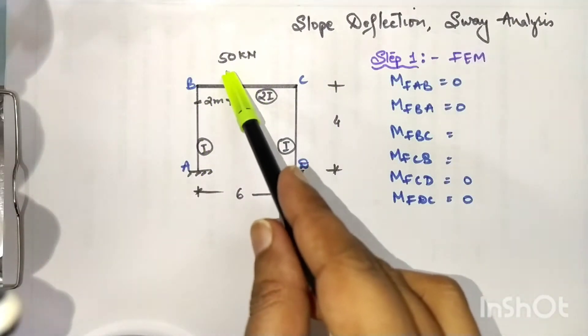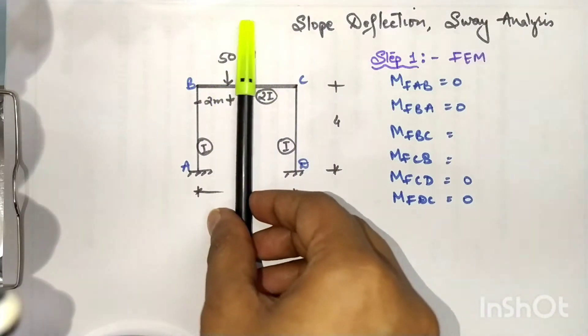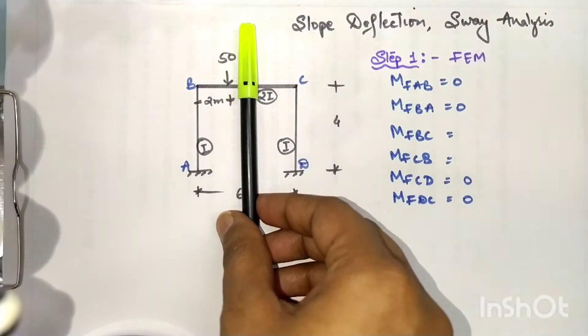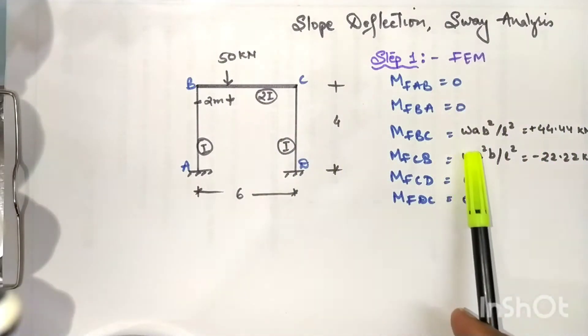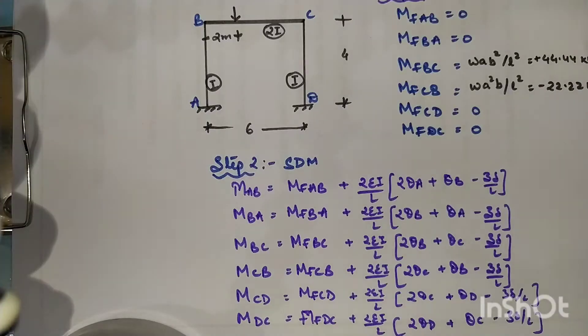AB and CD do not have any loads. Only BC panel is having load, and since loading is not symmetrical, this is a sway frame. This is our required fixed end moments.